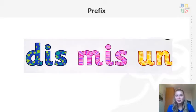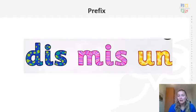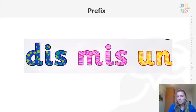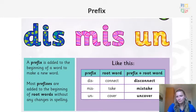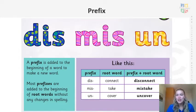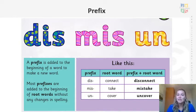So for our SPAG this morning we're going to be looking at prefixes. Now we've been using some of those in the spellings that we've been learning this year, so we're going to actually now really break it down to see what a prefix is. We're going to be looking at the prefixes dis, mis and un. Now a prefix is a small couple of letters, a small part of the word, which is added to the beginning of a word to make a new word.